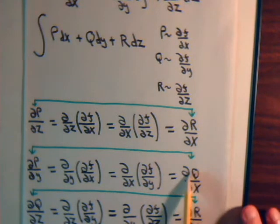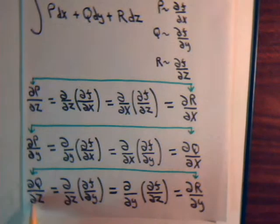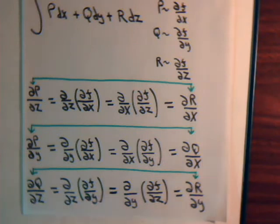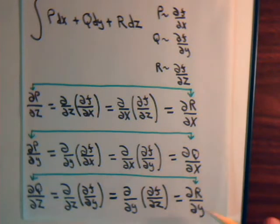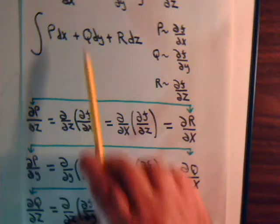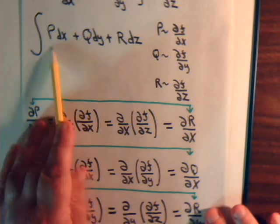We can also take the partial of q with respect to z. If this is an exact differential, q is the partial of f with respect to y, and r is the partial of f with respect to z. Interchanging the order of partial differentiation, we get: the partial of q with respect to z equals the partial of r with respect to y. We do not take the partial of p with respect to x, q with respect to y, or r with respect to z — so these three equations cover all the possibilities.